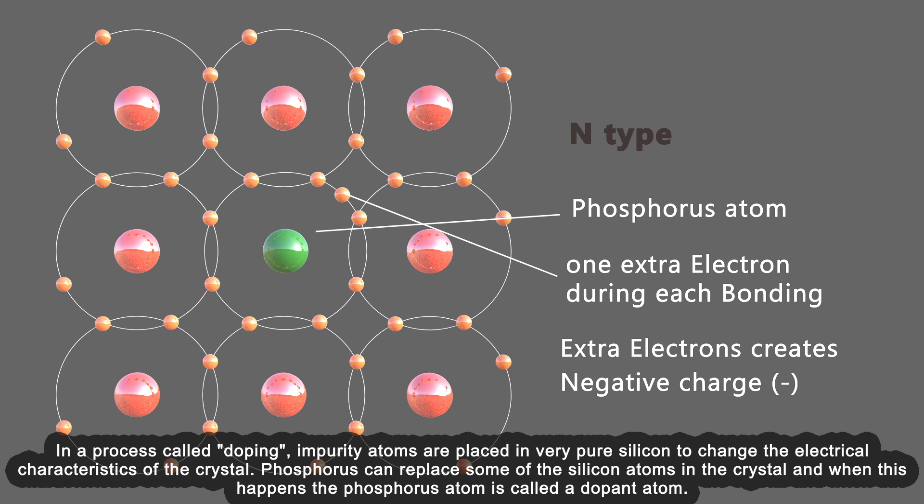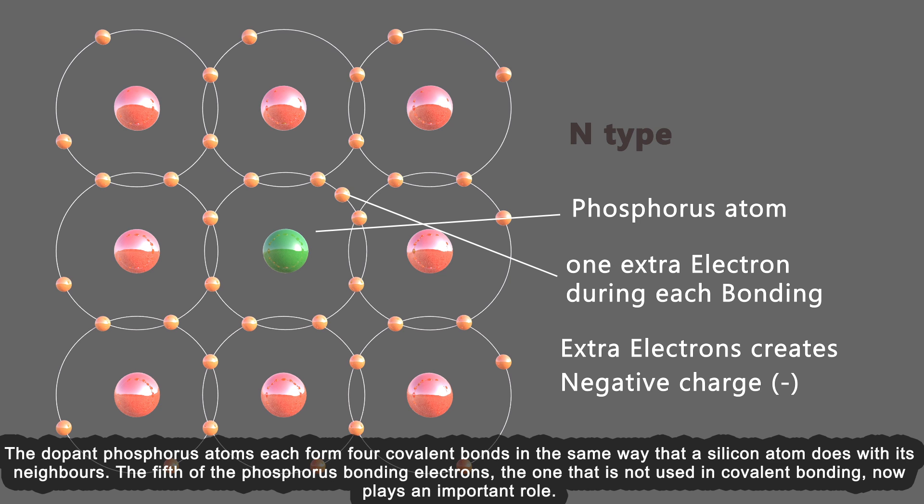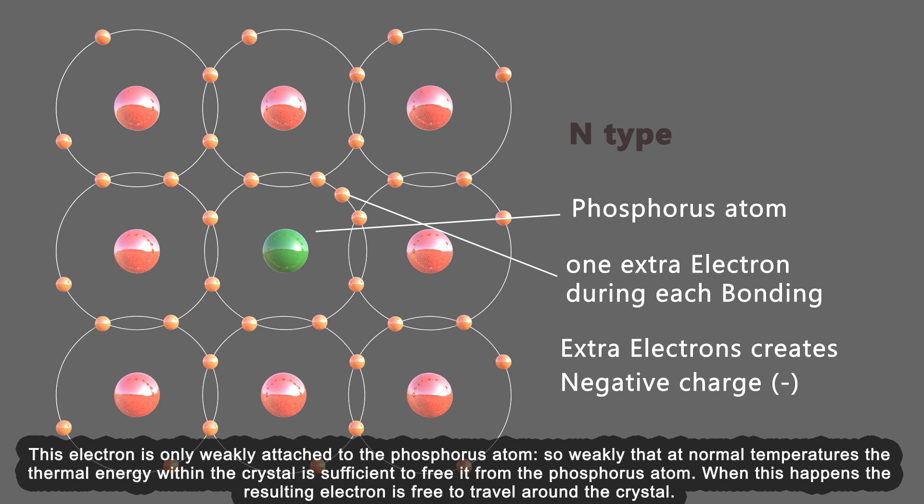Phosphorus can replace some of the silicon atoms in the crystal. When this happens, the phosphorus atom is called a dopant atom. The dopant phosphorus atoms each form four covalent bonds in the same way that a silicon atom does with its neighbors. The fifth of the phosphorus bonding electrons, the one not used in covalent bonding, now plays an important role. This electron is only weakly attached to the phosphorus atom, so weakly that at normal temperatures, the thermal energy within the crystal is sufficient to free it from the phosphorus atom.